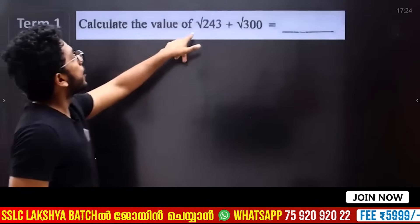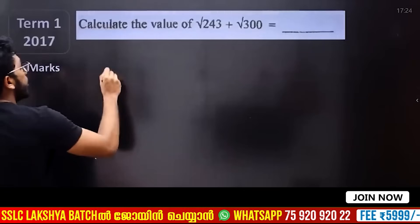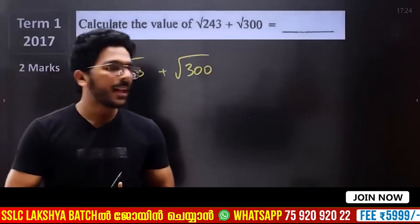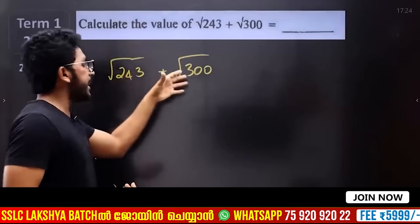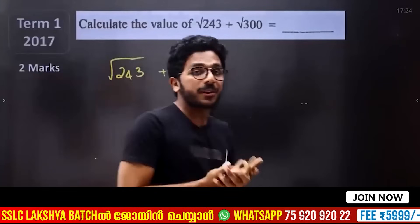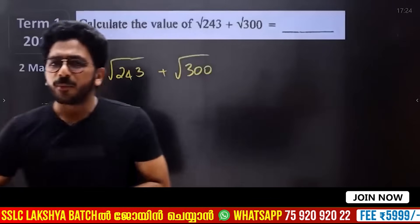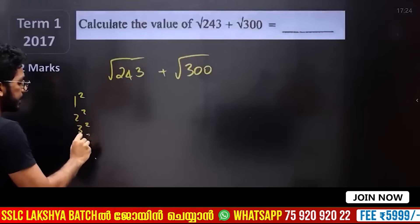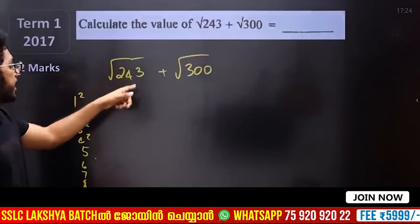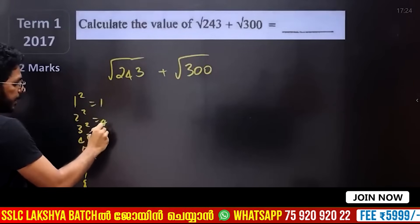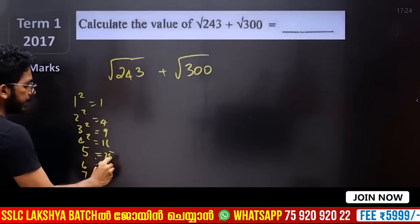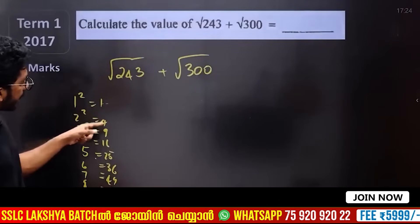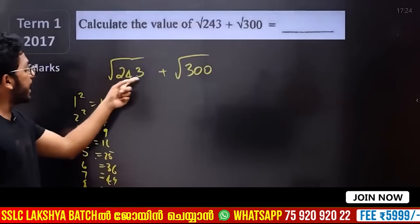Out of the box thinking: Route 243 and Route 300. Then Route 243 plus Route 300 — let's add them. Calculate the value. You can't get it directly. Route 243 — I'm going to break it down. Three squared, four squared, five squared, six squared, nine squared — sixteen, twenty-five, thirty-six.